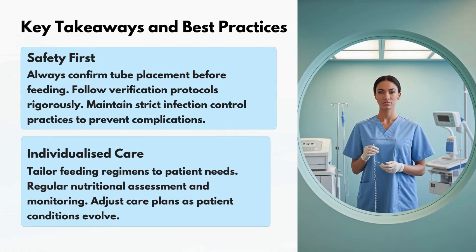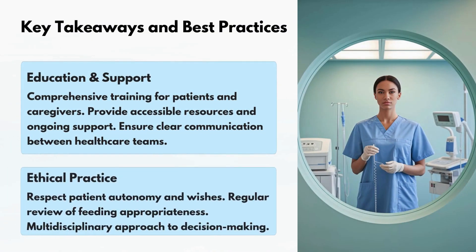Key takeaways and best practices: Safety first — always confirm tube placement before feeding, follow verification protocols rigorously, and maintain strict infection control practices. Individualized care — tailor feeding regimens to patient needs, conduct regular nutritional assessment and monitoring, and adjust care plans as conditions evolve. Education and support — provide comprehensive training for patients and caregivers, accessible resources, and clear communication between healthcare teams. Ethical practice — respect patient autonomy, regularly review feeding appropriateness, and use a multidisciplinary approach to decision-making.